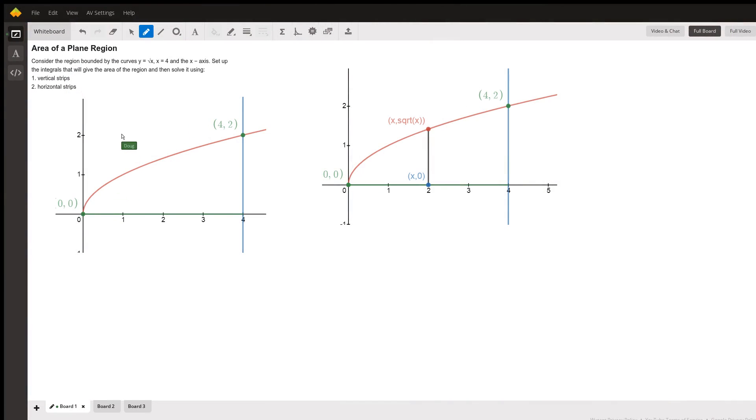This first graph on the left depicts the region that we want to find the area for. This is the graph y equals the square root of x, the red line, x equals 4, and y equals 0, the x-axis. So it's this region in here that we want to find the area.